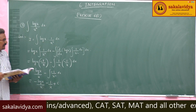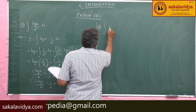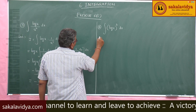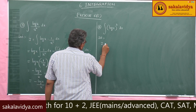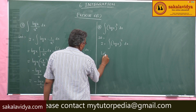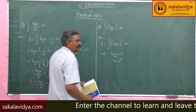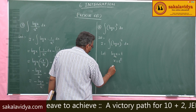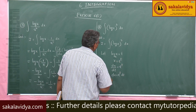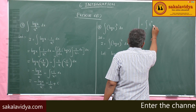Now let us move to the fourth problem: evaluate ∫(log x)² dx. Let i = ∫(log x)² dx. Suppose log x = t (base e), so x = eᵗ. Differentiating with respect to t: dx/dt = eᵗ, so dx = eᵗ dt. The integral becomes ∫t²·eᵗ dt.